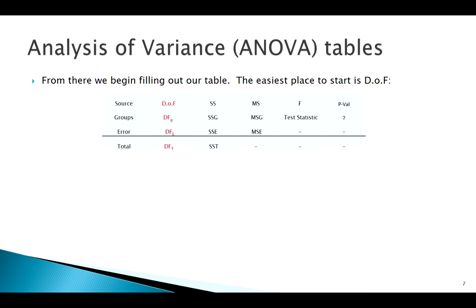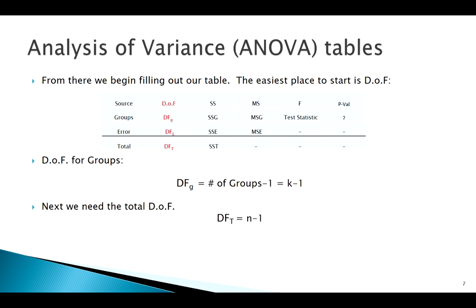The easiest place to start filling out the table is degrees of freedom, going left to right. The group degrees of freedom is k minus 1, where k is the number of groups. Total degrees of freedom is n minus 1, where n is the overall number of observations across all groups combined. The error degrees of freedom must equal total minus groups: (n minus 1) minus (k minus 1), which gives us n minus k.